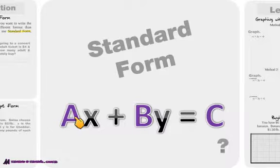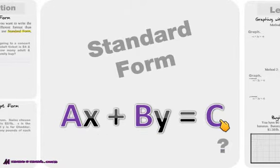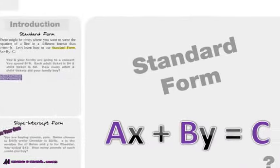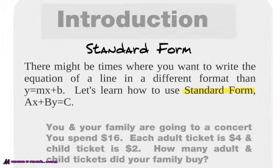Just to talk about these letters: a represents a number, b represents a different number — it could be the same if you want, but typically they're going to be different — and c represents a different number. Unlike y equals mx plus b form, the x and the y are together, and then the number is on the other side of the equal sign. There might be times when it's actually easier to write an equation of a line like this than in y equals mx plus b.